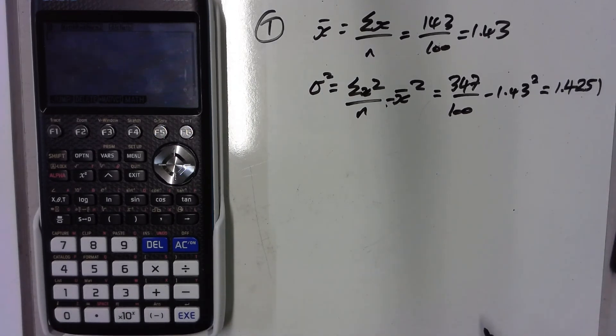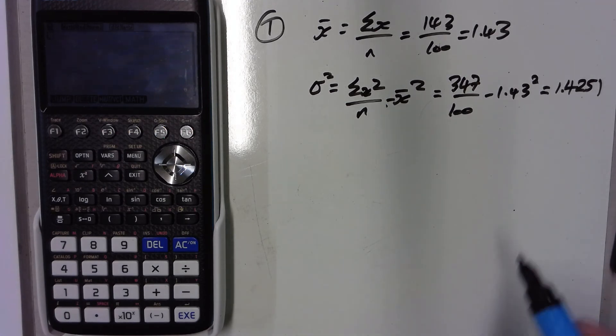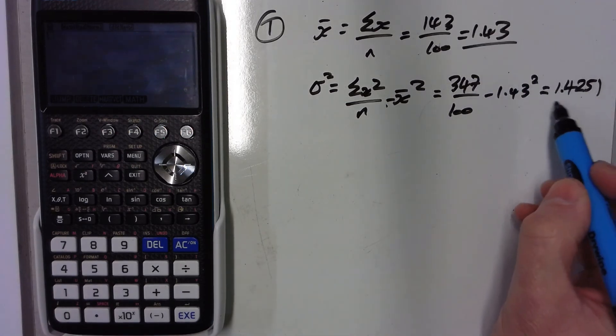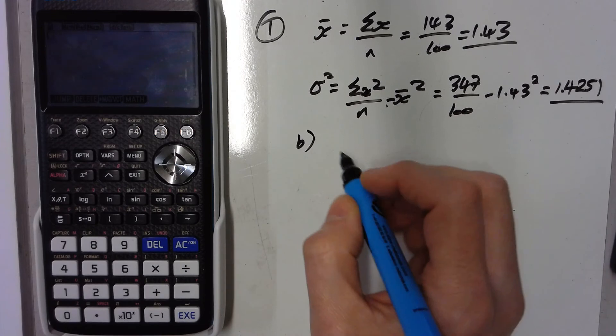No need to square root it to find the standard deviation. We've just asked to find out what the variance is. And you'll notice that those two things are both the same.